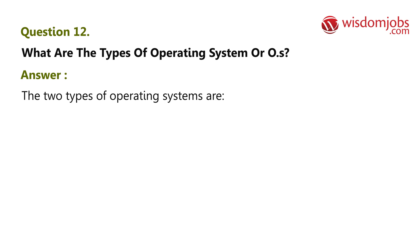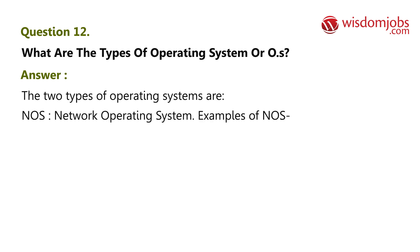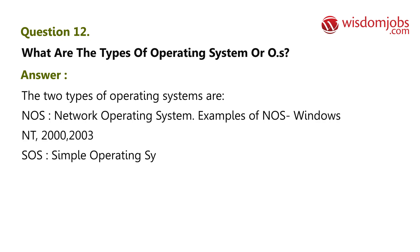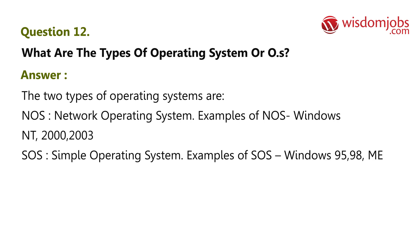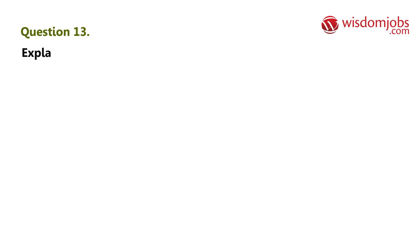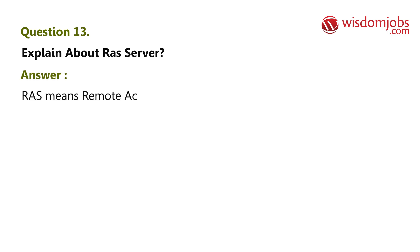Question 12: What are the types of operating systems? The two types of operating systems are: NOS (Network Operating System) — examples include Windows NT, 2000, and 2003; and standalone operating systems — examples include Windows 95, 98, and ME.